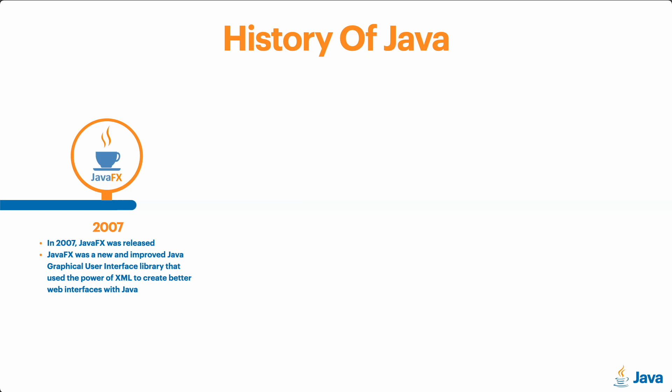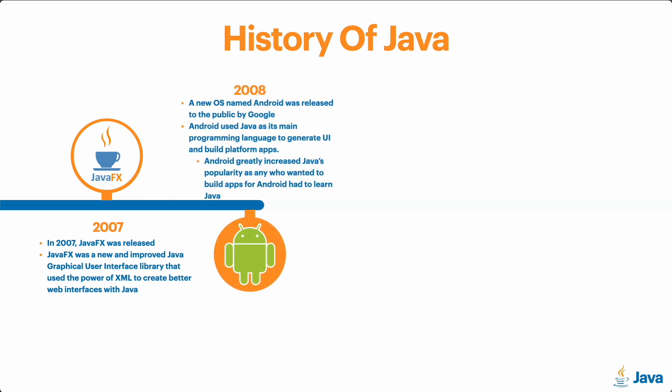Another big boost for Java came in 2008 when Android was released. Google released a new OS named Android to the public, and Android used Java as its main programming language to generate UI and build apps. Essentially, if you wanted to build any mobile application for the Android platform, you had to write the code in Java. Because of this, interest in Java increased a lot, because many people wanted to create apps for Android and the only way to do that was to learn Java.